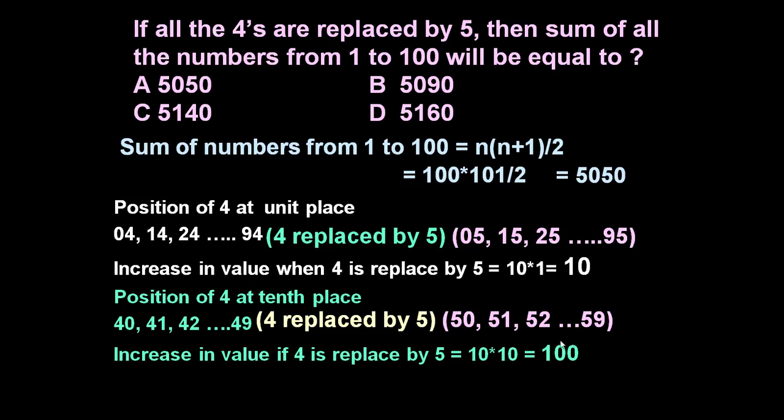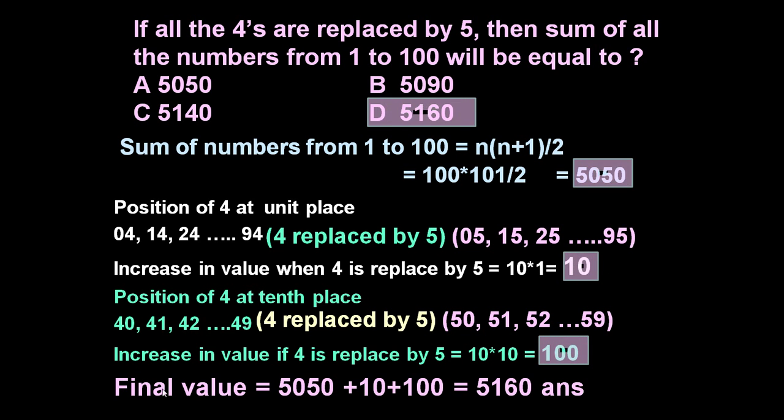So due to 10th place position of 4, increment in value is 100, and due to position of 4 at unit place, increment in value is 10. So final value will be 5050 because these are the sum of numbers when 4 is at its original position. Now this 10 when 4 is at unit place is replaced by 5, plus 100 when 4 is replaced by 5 at its 10th place. So total is 5160. Answer is 5160.